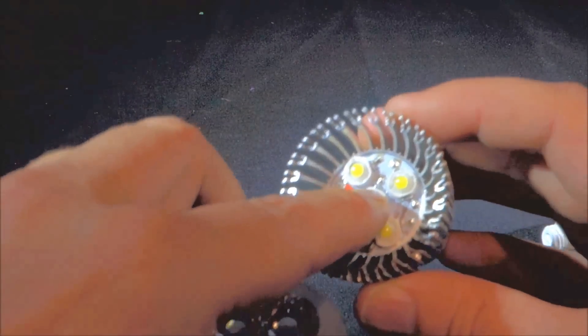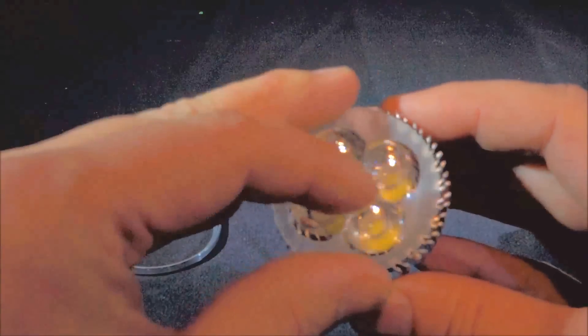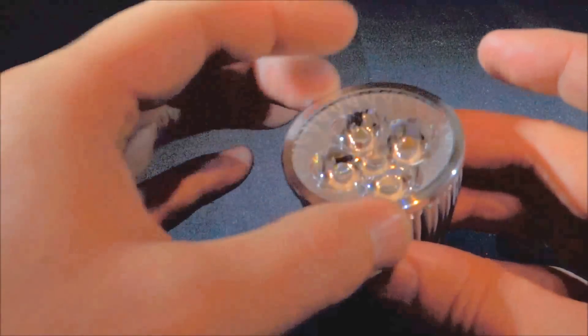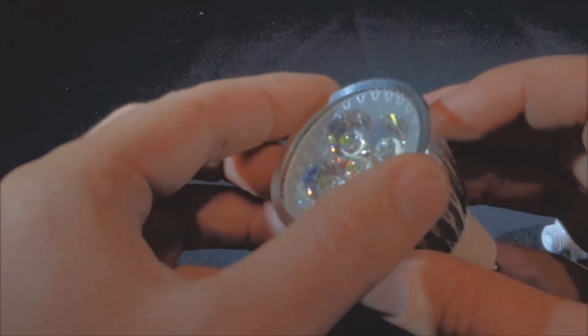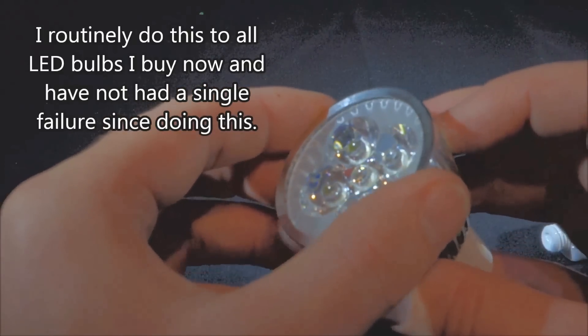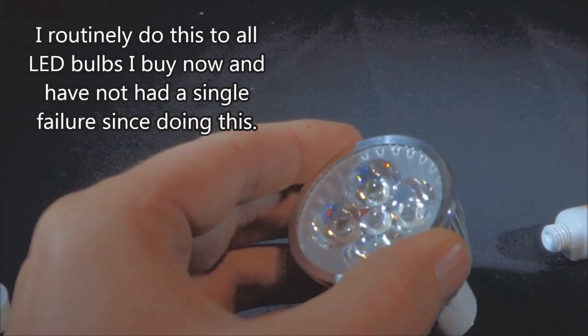And then just put it all back together and you'll get a decent addition to the back of that plate. Put your lens back on, screw it all back together, and there you will have significantly increased the life of your LED bulb. Thank you very much.